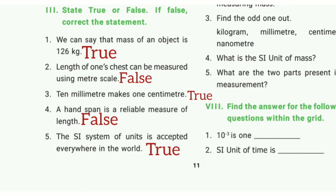State true or false; if false, correct the statement. First one: We can state the mass of an object is 126 kg. The answer is true. Second one: The length of 1 foot can be measured using a meter scale. The answer is false. Third one: 10 millimeters makes 1 centimeter. The answer is true.